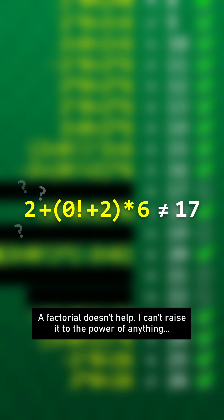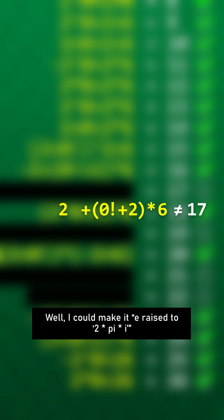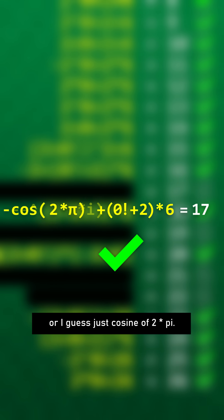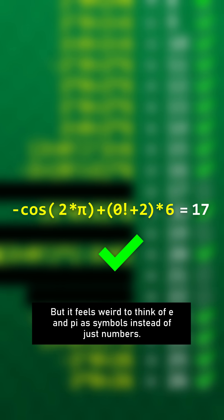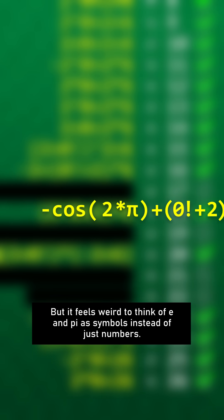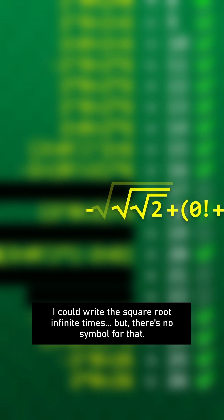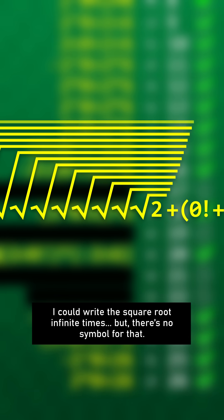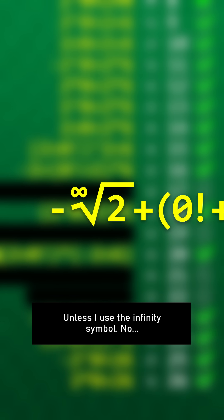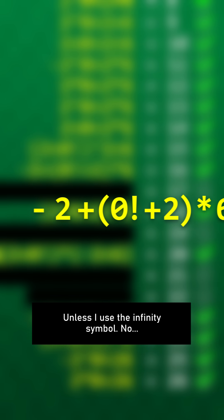If factorial doesn't help, I can't raise it to the power of anything. Well, I could make it e raised to 2 pi i, or I guess just cosine of 2 times pi. But it feels weird to think of e and pi as symbols instead of just numbers. I could write the square root infinite times, but there's no symbol for that. Unless I use the infinity symbol. No.